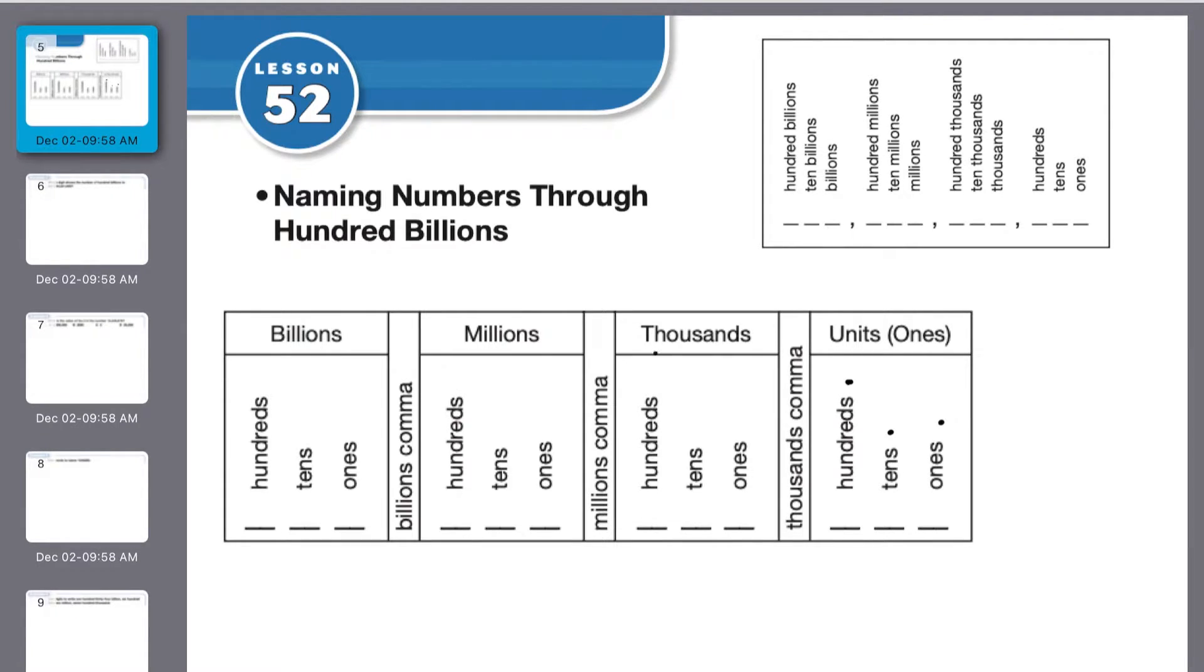Then you get on to thousands, so one thousand, ten thousand, one hundred thousand, and then you get on to millions, one million, ten million, one hundred million, billions, one billion, ten billion, one hundred billion. Every three spots you always add a comma.